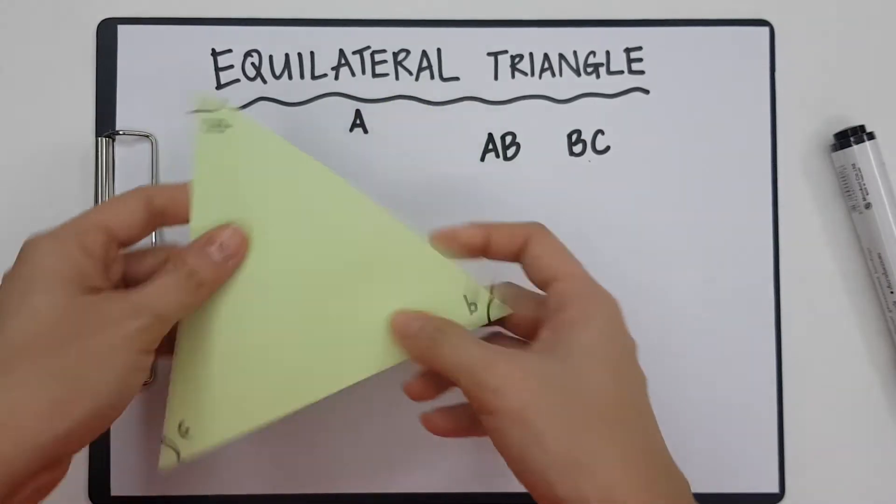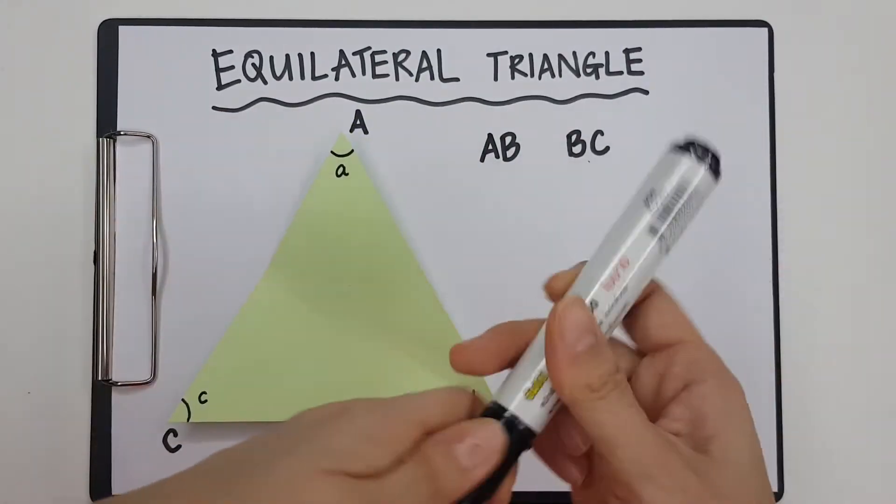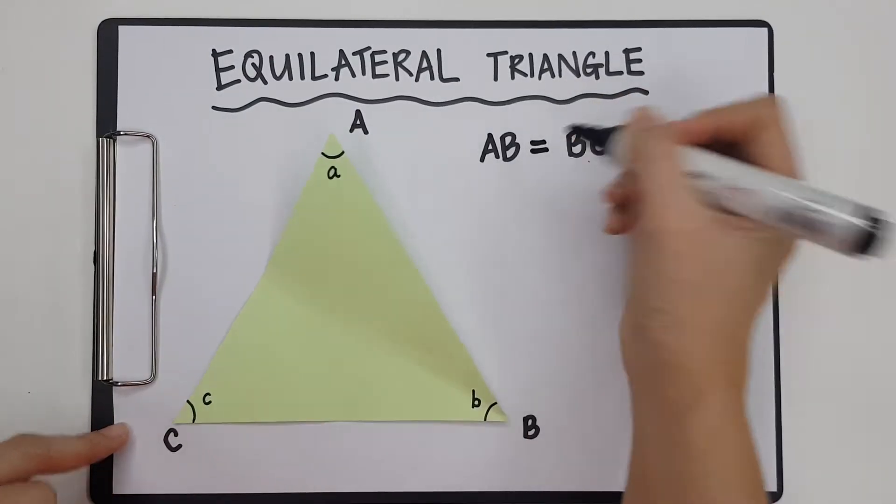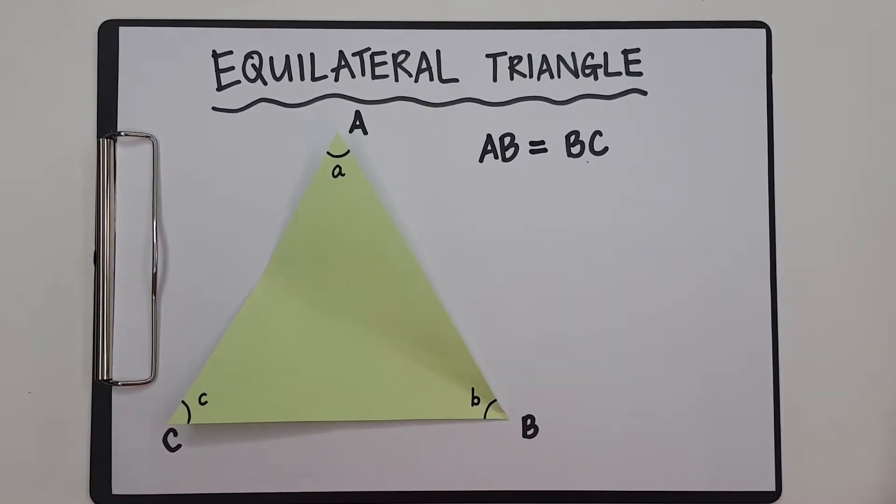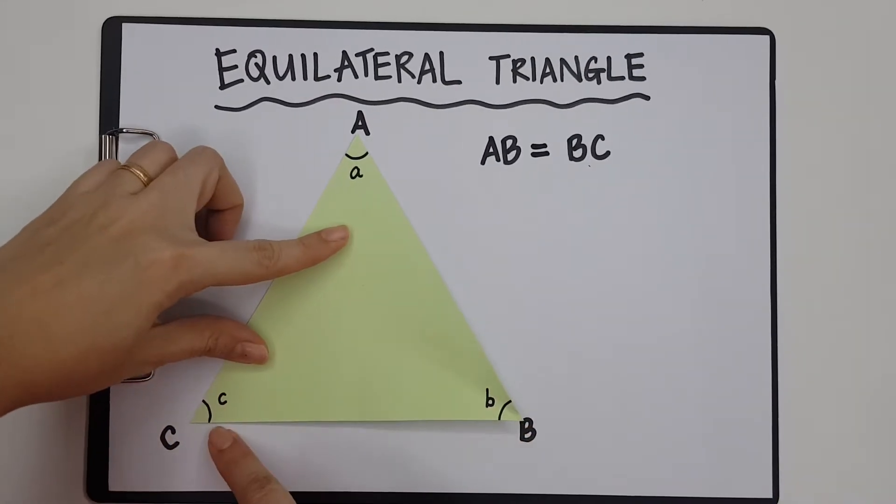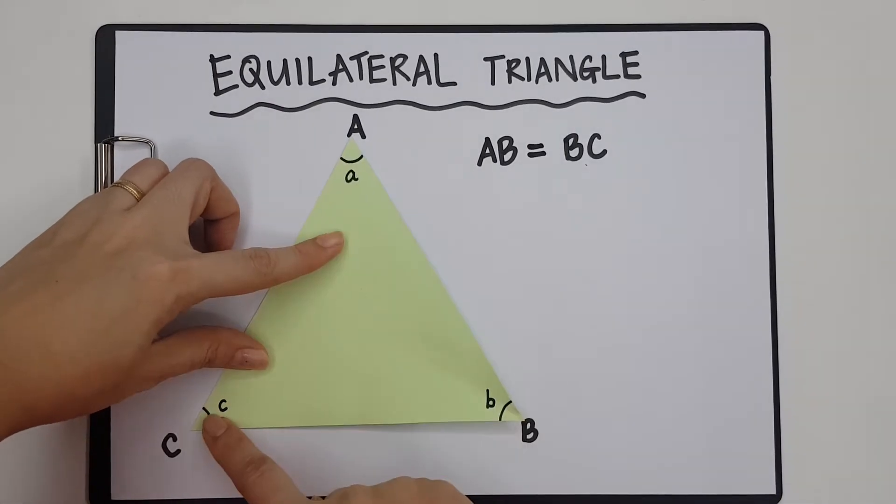So in other words, I can say that AB has the same length equals to BC. Now I'm going to take BC and compare it with AC. So let me write that down.